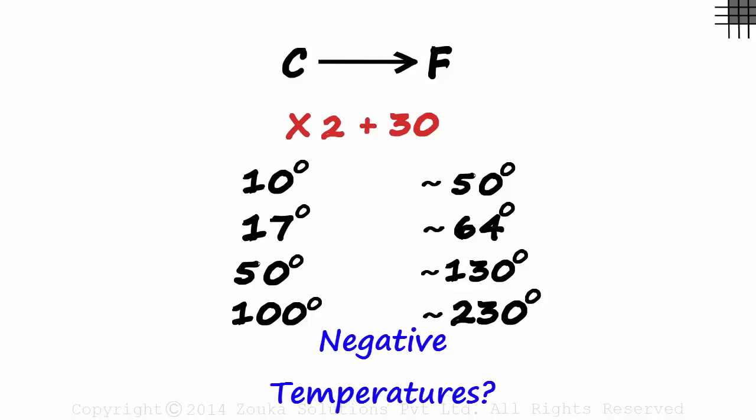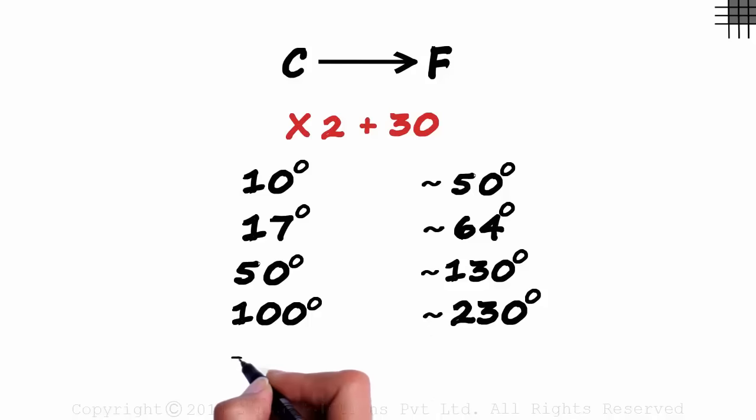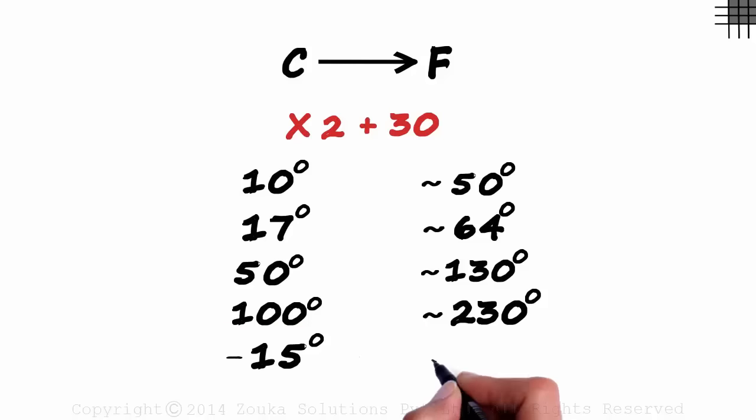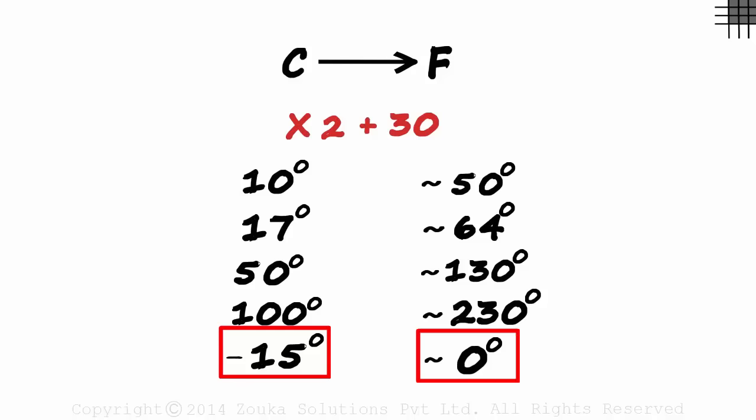Does this work for negative temperatures as well? Absolutely! Say minus 15 degrees Celsius. Minus 15 times 2 is minus 30. And minus 30 plus 30 equals 0. Minus 15 degrees Celsius is approximately 0 degrees Fahrenheit.